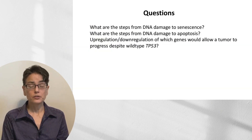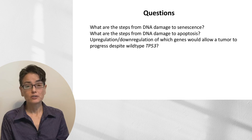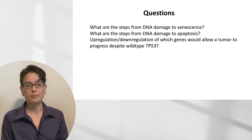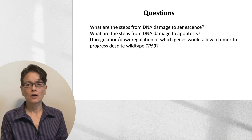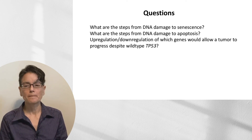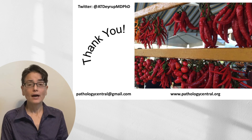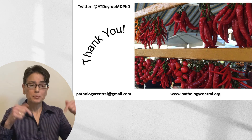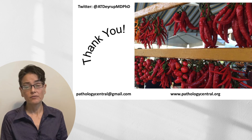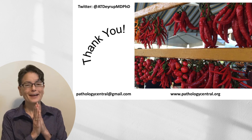Just to finish up — to check your comprehension, see if you can answer these questions: What are the steps from DNA damage to senescence? What are the steps from DNA damage to apoptosis? And if you have a healthy P53, what other proteins are involved in allowing carcinogenesis that are in the same pathway? Go back and take a look. Finally, thank you — you can find me on Twitter, shoot me an email, or find me at pathologycentral.org. Thank you very much for your time. Please put comments down below — they really help guide the videos I do. Have a great day.